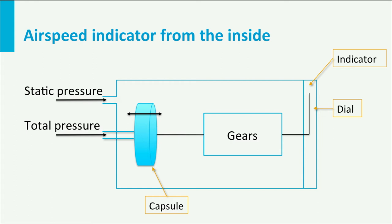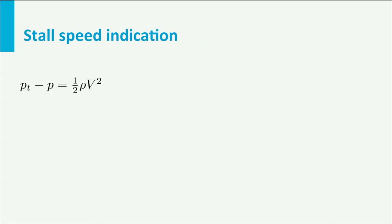For low speed applications we can use Bernoulli's law to determine the airspeed based on the pressure difference. The left-hand side of the equation is the measured pressure difference. The right-hand side is the dynamic pressure. However, we have a problem here. There is one equation with two unknowns. The air density is unknown to the instrument and the airspeed as well. So this cannot be solved.